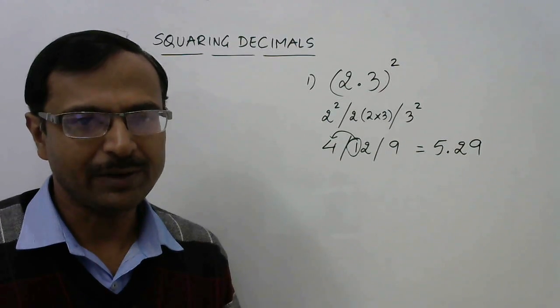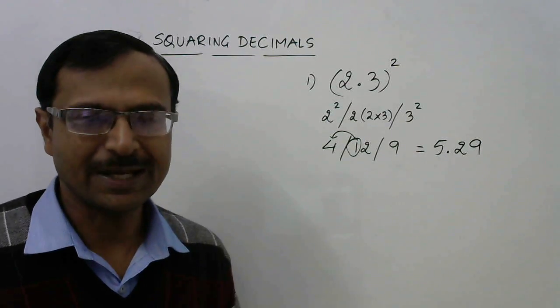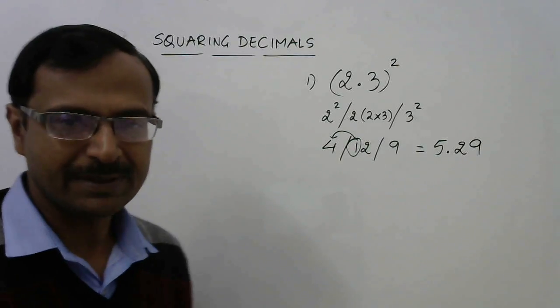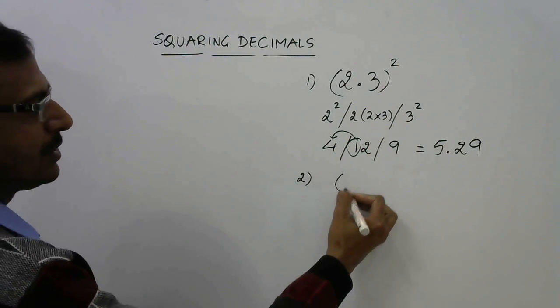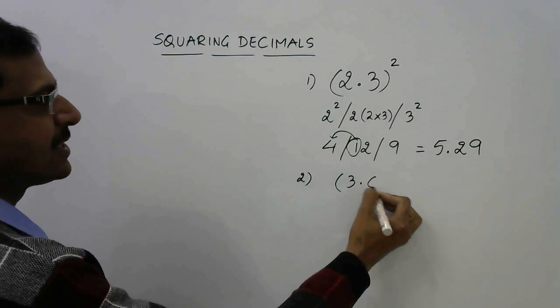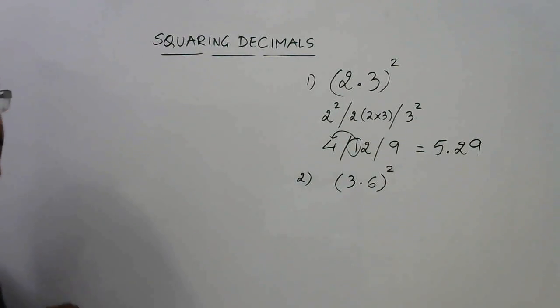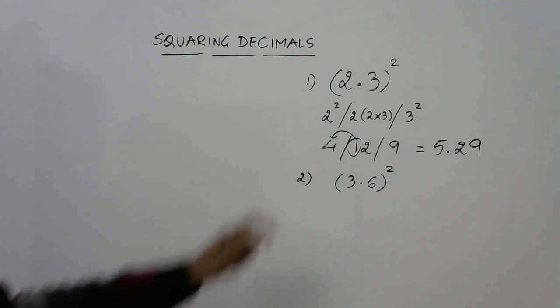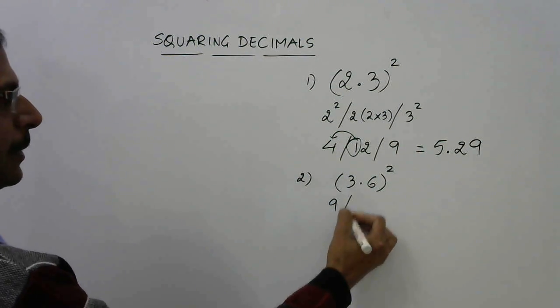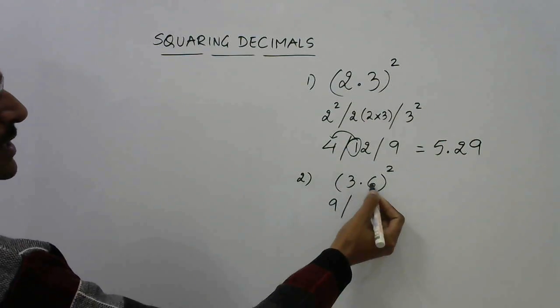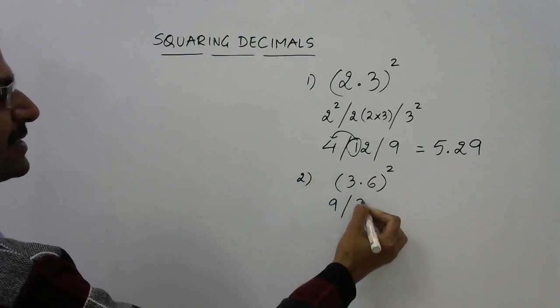Let's have one or two more examples. This is (3.6)². Now let's see what numbers we have to write. I will not be writing this step now. 3² is 9, 3 into 6 is 18 and double of 18 is 36.